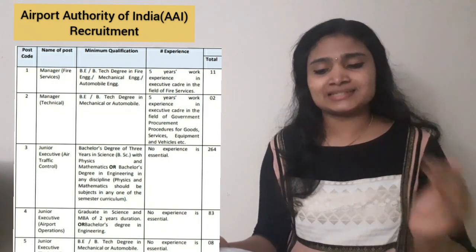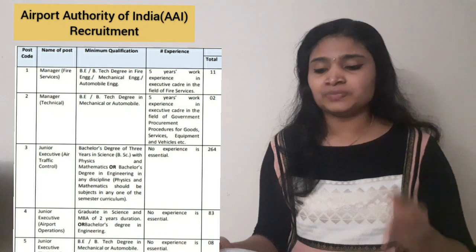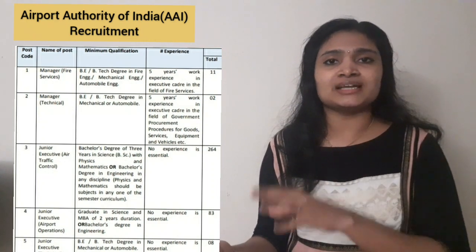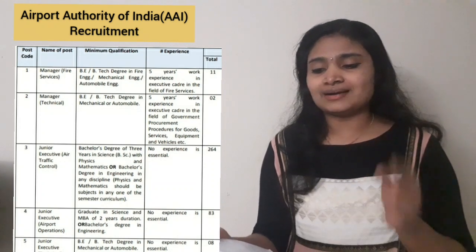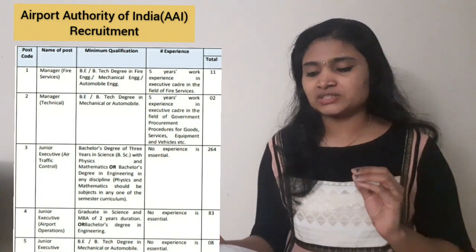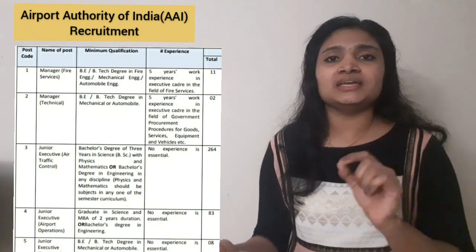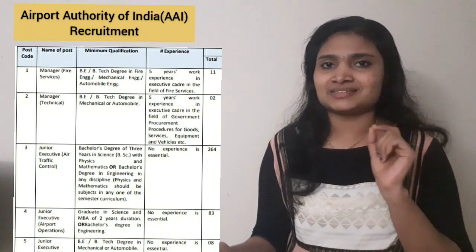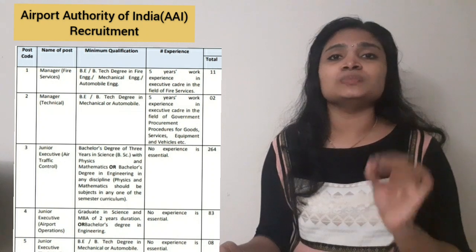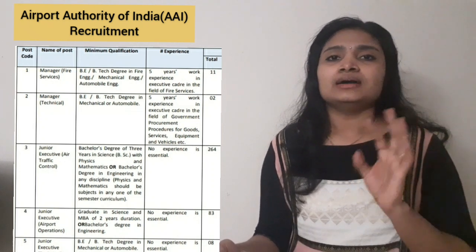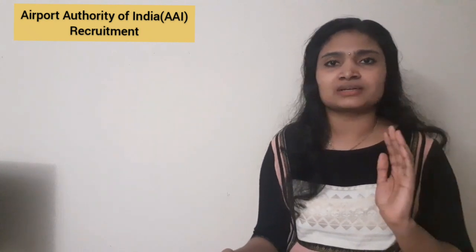For Junior Executive Airport Operations, the qualification is a Science graduation plus MBA, or BE/B.Tech. For Junior Executive Technical, it is specifically BE or B.Tech in Mechanical or Automobile branches. All Junior Executive posts require a minimum of 60% marks in the qualifying examination — BE, B.Tech, or equivalent.